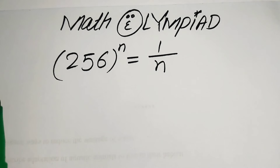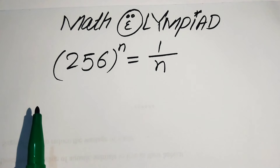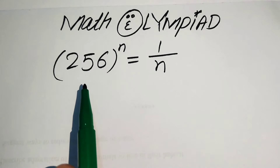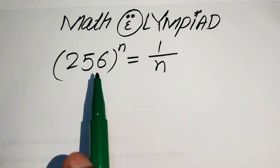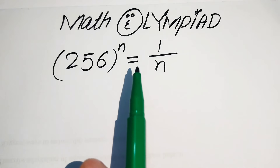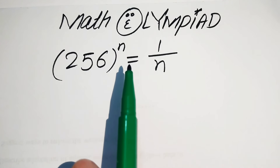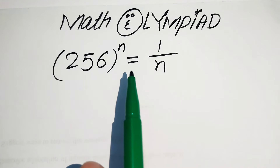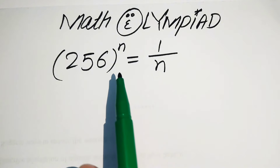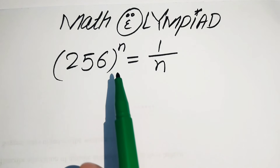Hello everyone, welcome. We're going to solve this Math Olympiad exponential problem. Here we have 256 to the power of n equals 1 over n, and we need to find the value of n.